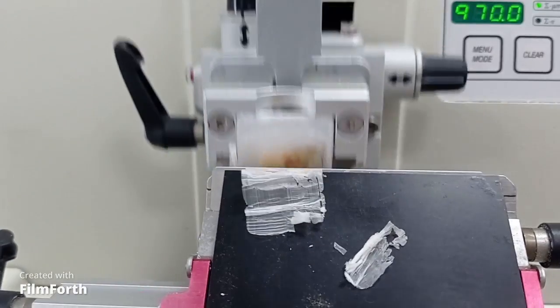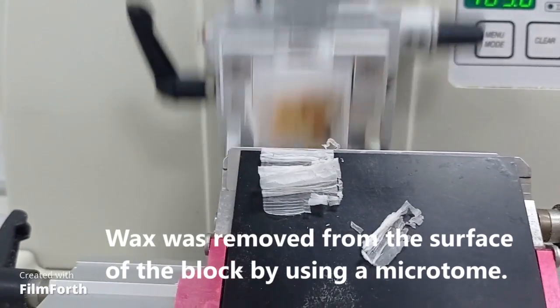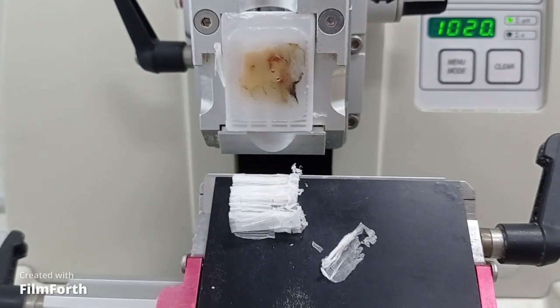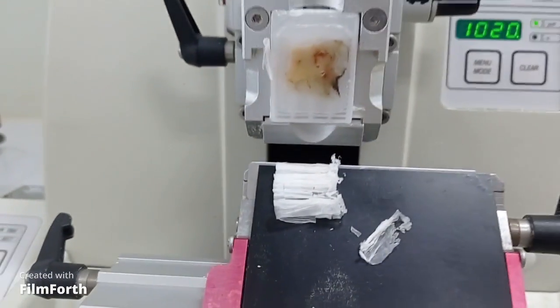At this point, after cooling the blocks, I am taking the blocks one by one and putting them on the microtome machine and trimming them first to expose the complete tissue. After that, I will proceed to the microsectioning.